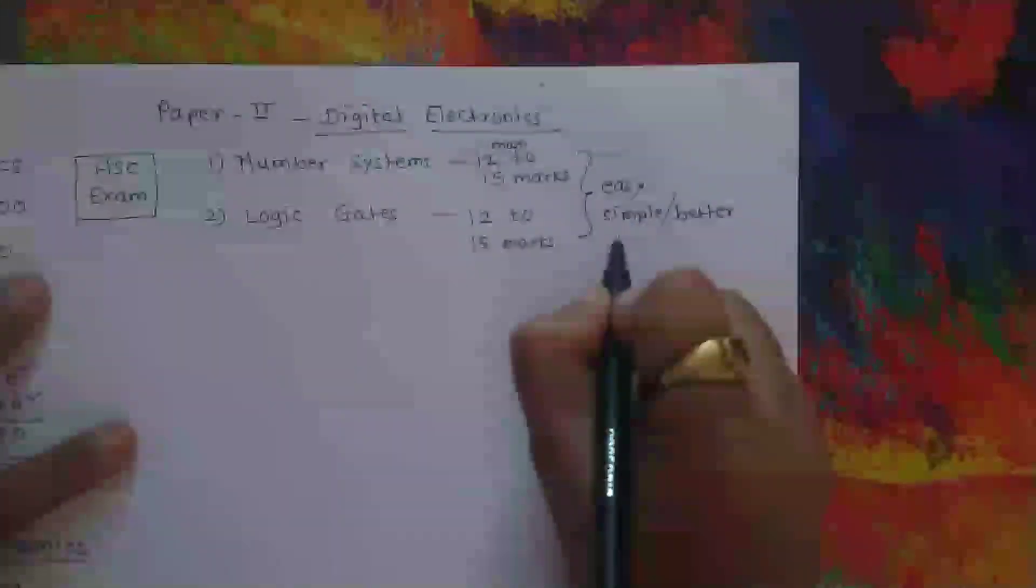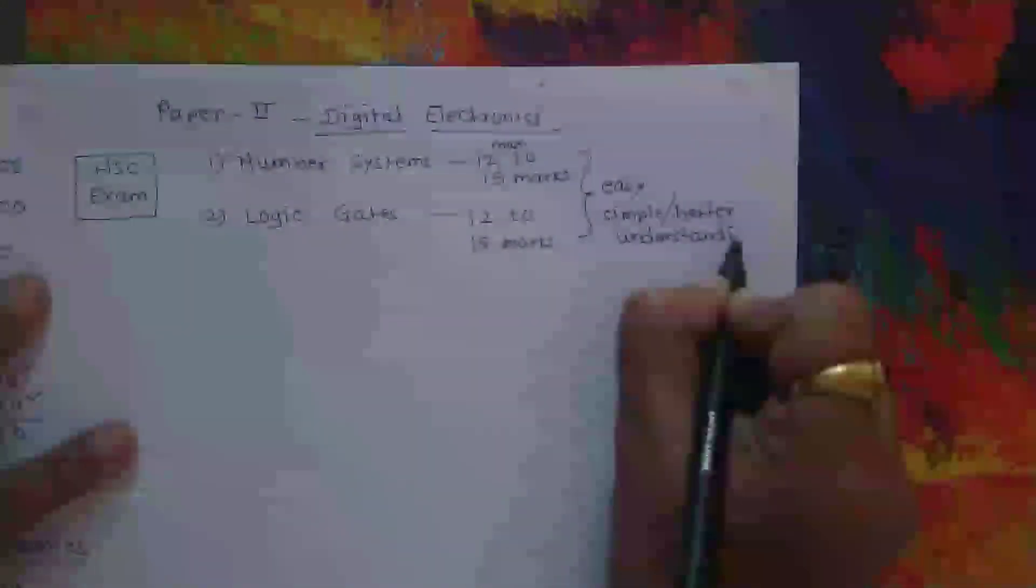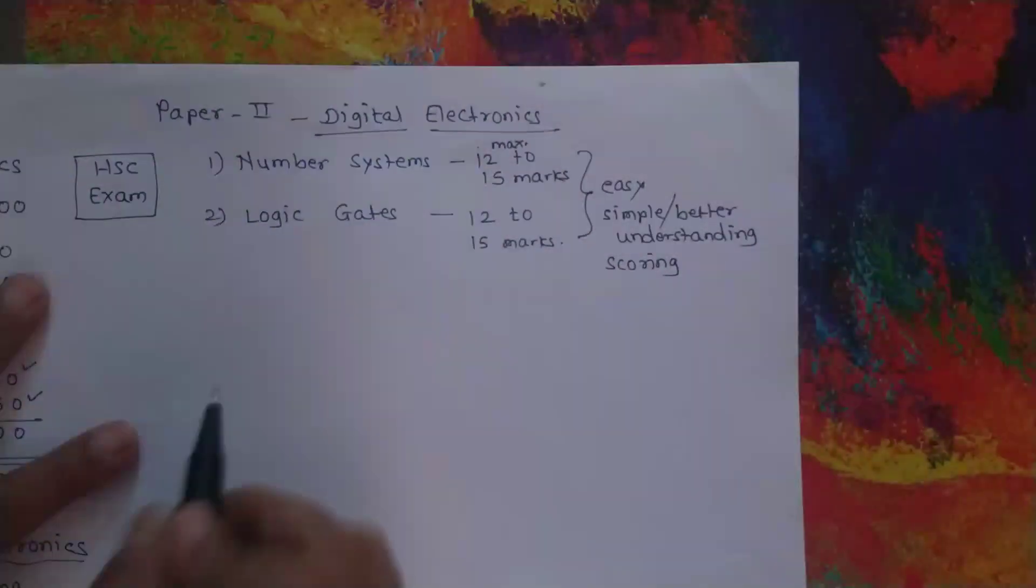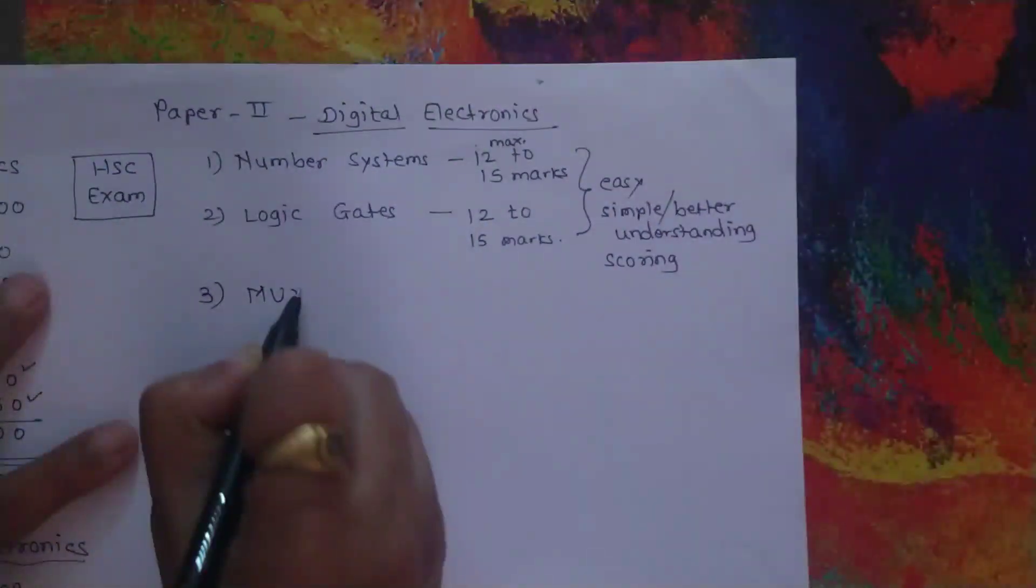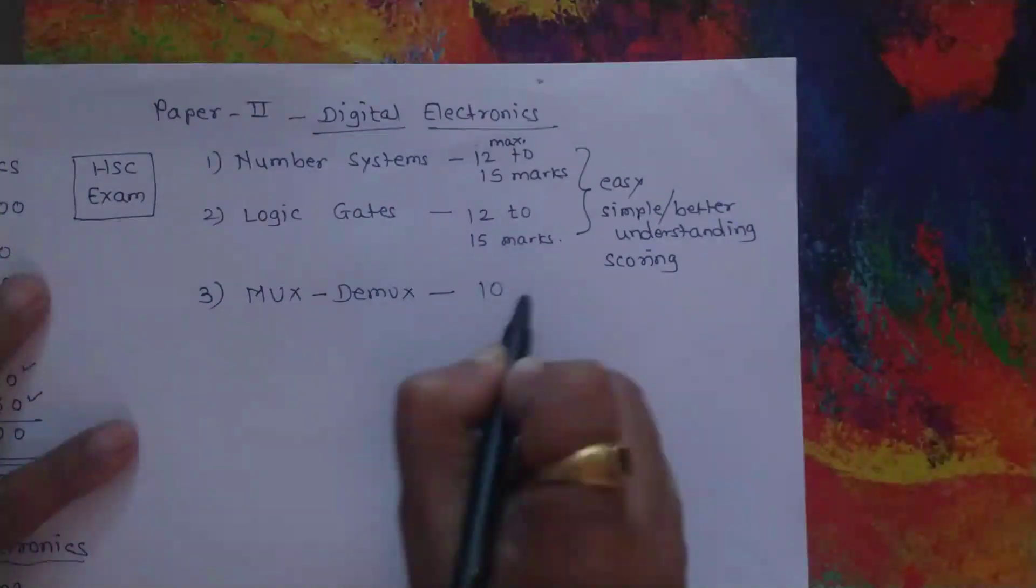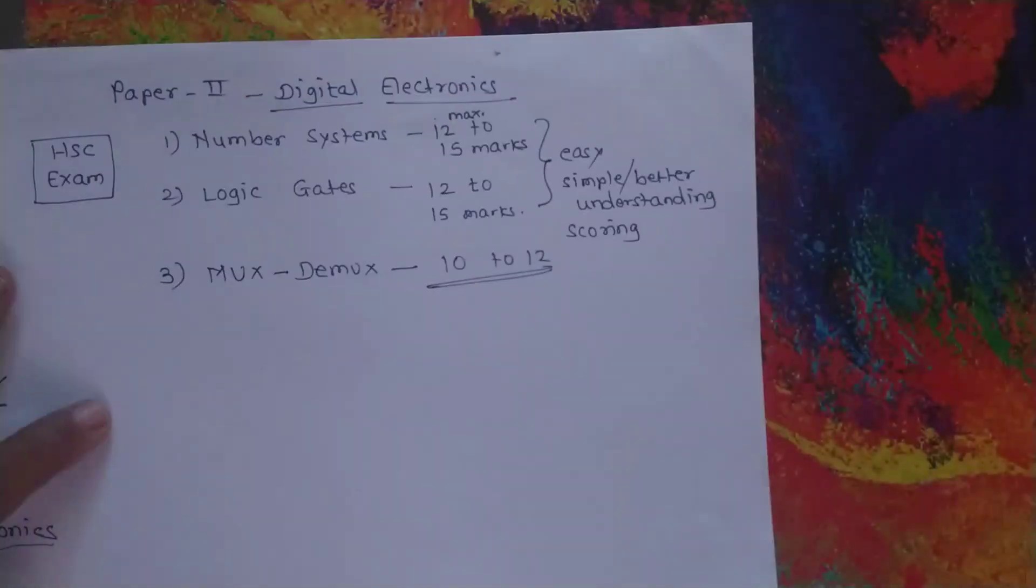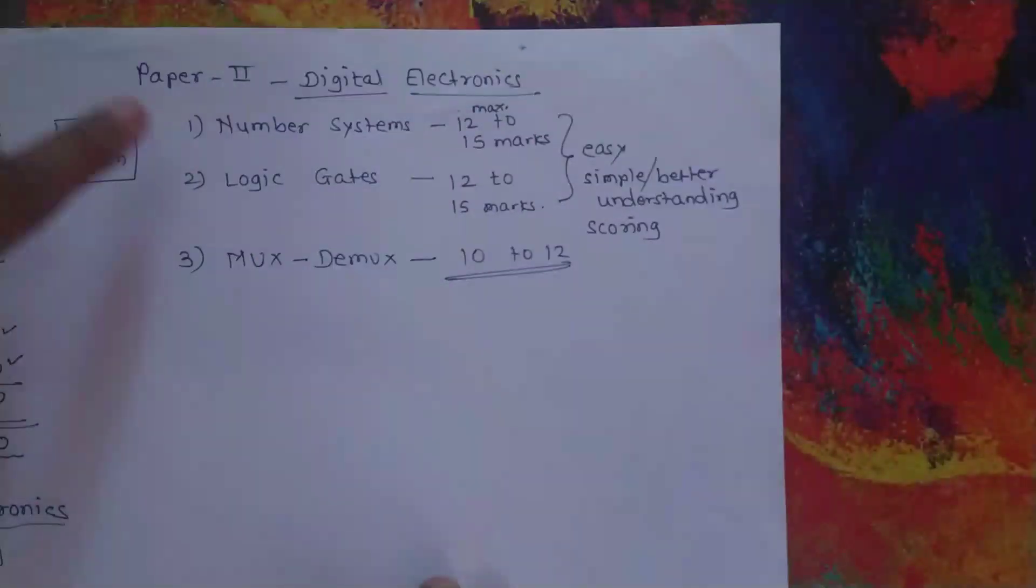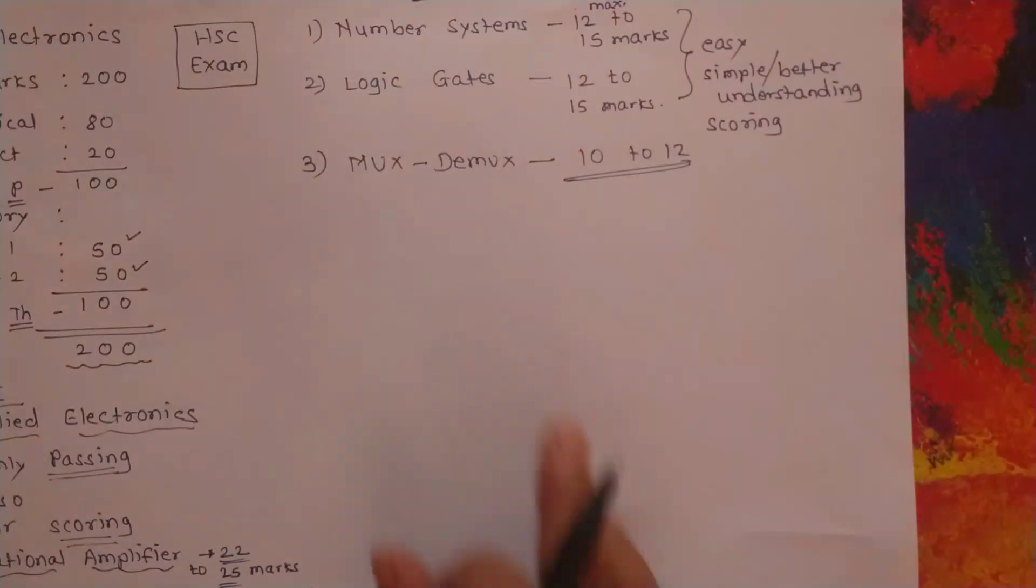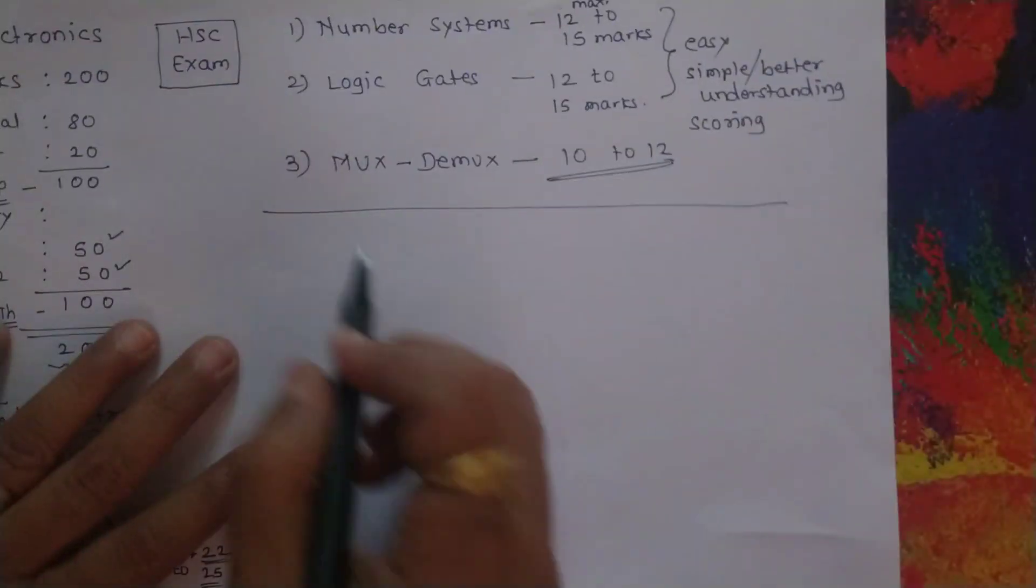If you have still more time, you can prepare for mux-demux chapter, which also gives you a chance to get maximum marks of 10 to 12. Like this, three chapters from Paper 2 and three chapters from Paper 1, you can score higher if you work hard at the last moment.